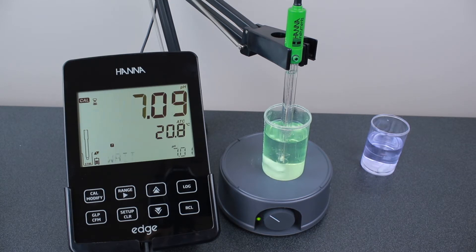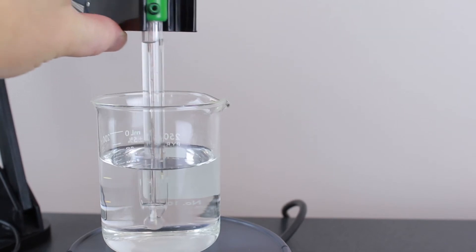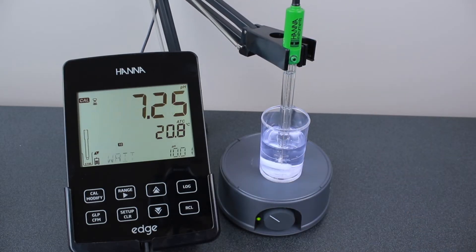Once again, once stable, press confirm. Rinse the electrode again and place it into your pH 10.01 buffer. Once you have calibrated your three points, press the CAL button to save calibration and return to measurement mode.